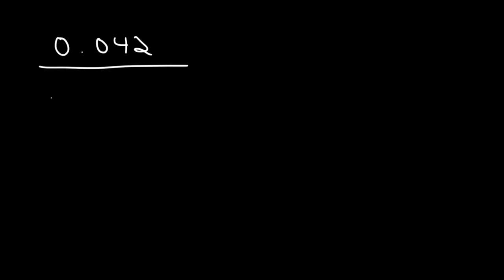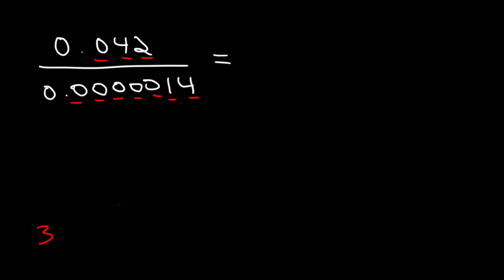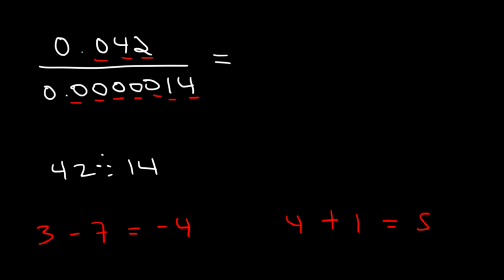Last example on this type of problem. Let's say we have 0.042 divided by 0.000014. In the numerator we have 3 digits, and in the denominator there are 7 digits. 3 minus 7 is negative 4 — treat it as positive 4 and add 1, so that's 5. We need 5 digits to the left of the decimal. Now, 42 divided by 14 is equal to 3. So that's a 3 with 4 zeros, giving us 5 digits on the left, making the answer 30,000. If you type it in your calculator, 0.042 divided by 0.000014 is indeed 30,000.